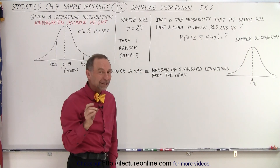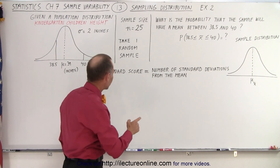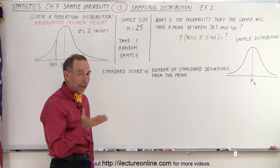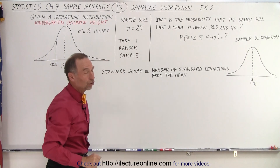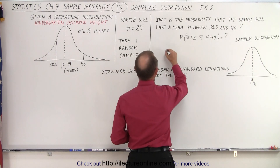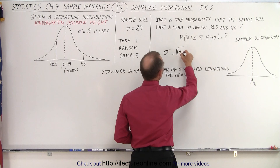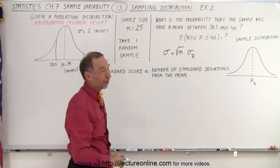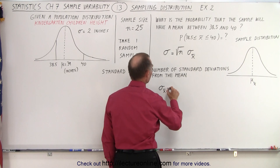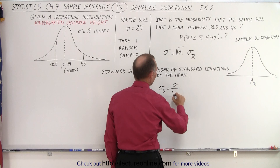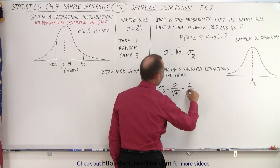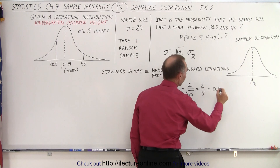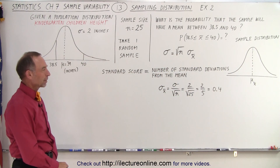We're going to need to find the standard score of the sample distribution. The standard score is equal to the number of standard deviations from the mean. We need to compare the standard deviation of the population to the standard deviation of our sample distribution. The standard deviation of the population equals the square root of n times the standard deviation of the sample distribution. So we can find the standard deviation of the sample distribution by taking the population standard deviation divided by the square root of the sample size — in this case, 2 divided by the square root of 25, which equals 2 divided by 5, which equals 0.4.